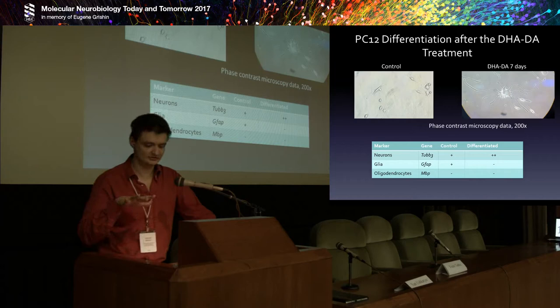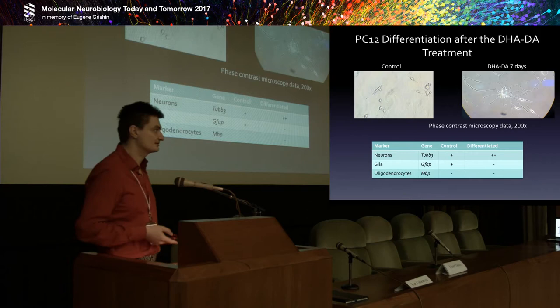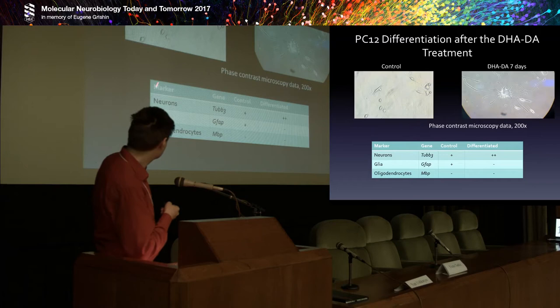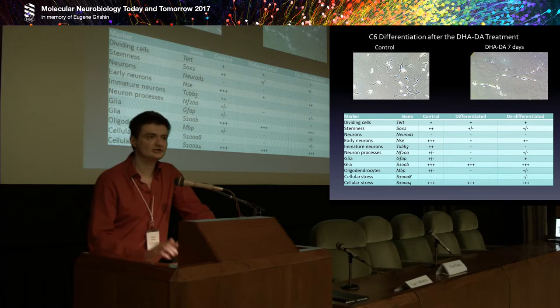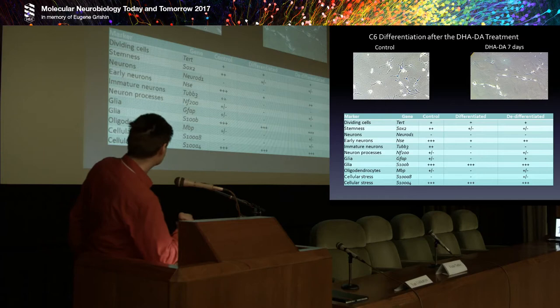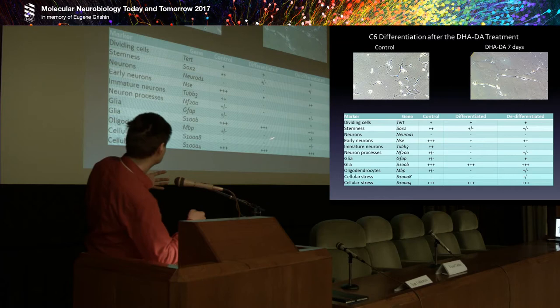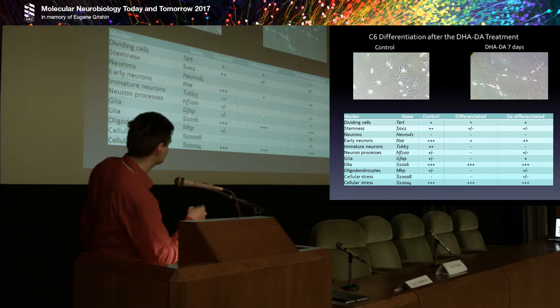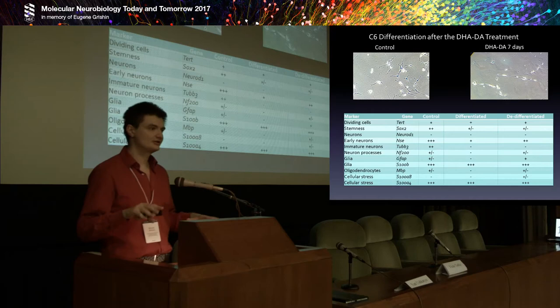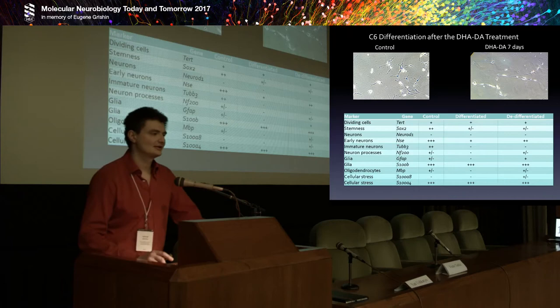For the pheochromocytoma cell line, it was a neuronal type of differentiation — you can see the neuronal marker increase and the glial marker disappearance. For the glioma cell line the situation was more complex, because we expected to see two glial markers, GFAP and S100-beta, to increase and at least remain. But only one of them stayed after a two-week treatment with N-acyl dopamines. On the other hand, a marker of mature neurons, NSE, remained, while other neuronal markers disappeared.